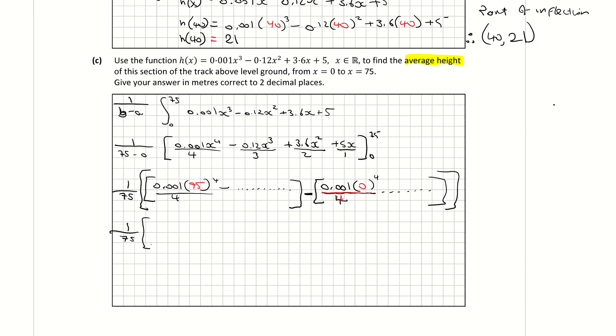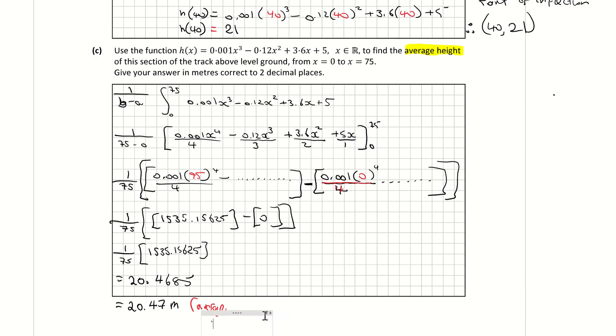So that's going to leave me with 1 over 75. And when I go to my calculator and I do the subbing in for 75, I got 1535.15625. And when I sub in 0, I just get 0 because x has been multiplied by a coefficient and x is 0. So that's 1 over 75 times 1535.15625. When I multiply that together, I'm getting 20.46875. The question wants it to 2 decimal places, so that is equal to 20.47 metres. So the average height is 20.47 metres. And that's our solution.